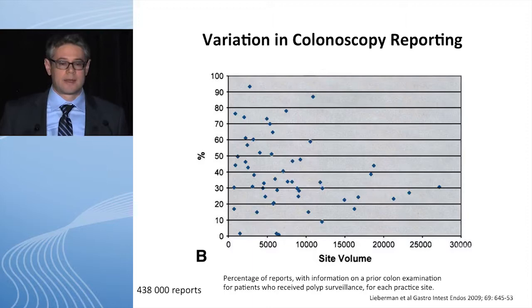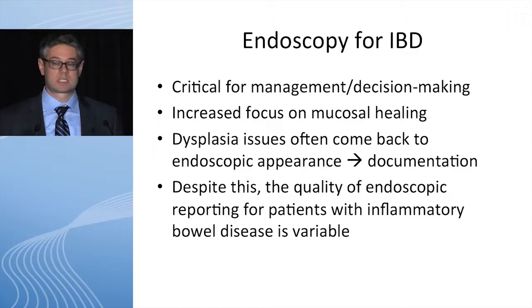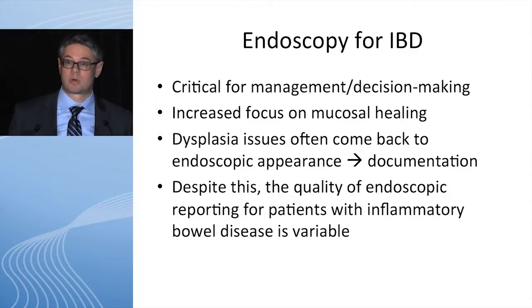There is some data on variation when it comes to the quality of endoscopy reporting. This is an analysis Dave Lieberman put together for almost half a million colonoscopy reports, looking at patients undergoing colonoscopy for polyp surveillance — specifically, what proportion of procedures documented on the colonoscopy report when the last colonoscopy was, in terms of identifying the time interval for the colonoscopy. You can see there's incredible variation that doesn't vary by site volume. There's no conclusive message other than to say there's a lot of variation in how this is done, and this is the only data really out there for variation in endoscopy reporting — not specific to IBD, but one could certainly imagine the significant variation that exists in endoscopy reporting for IBD.